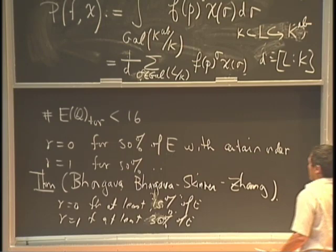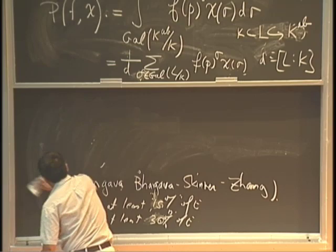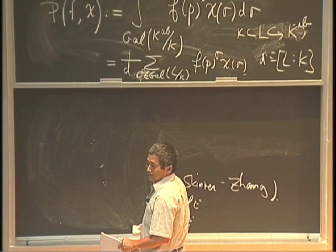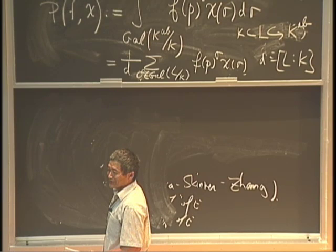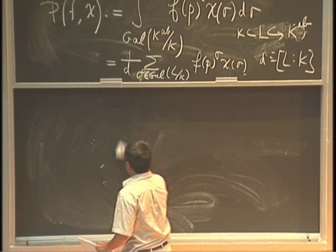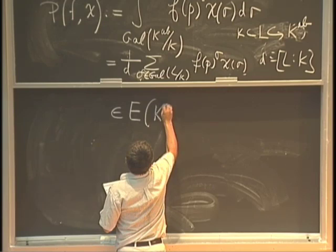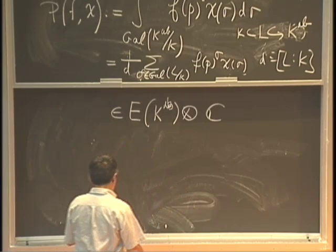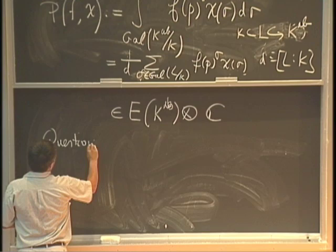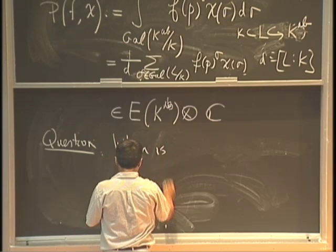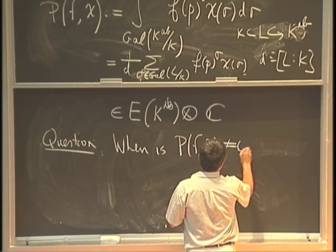This point P_F(χ) is called the period integral. It lies inside E(K^{ab}) ⊗ ℂ. The main question is: when is P_F(χ) nonzero? We construct a point and want to see when it is nonzero.